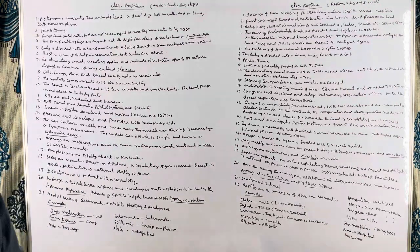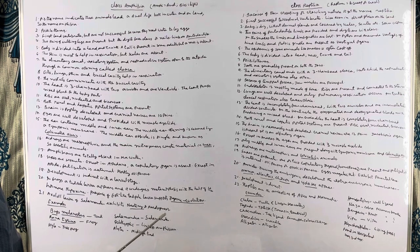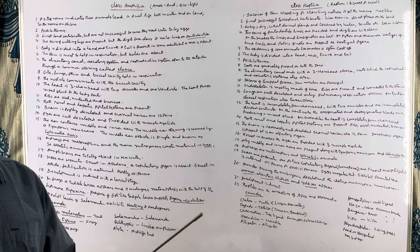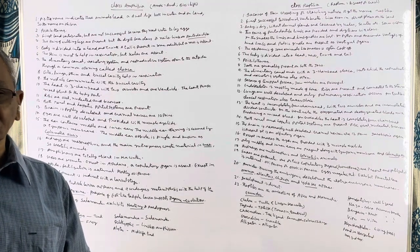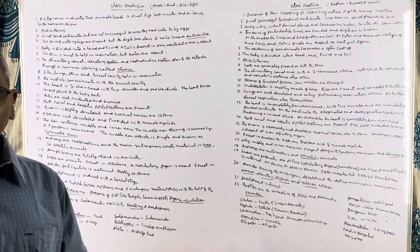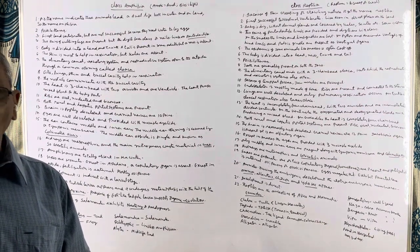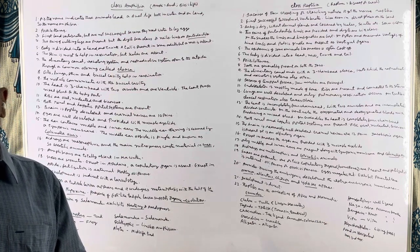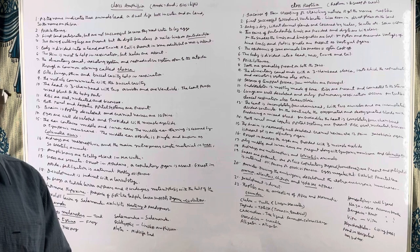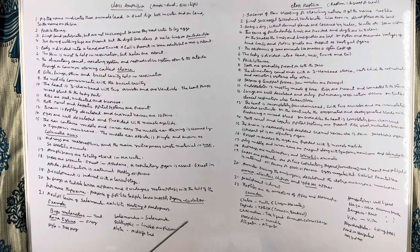There are some amphibians like salamander whose larva is called axolotl. The larva of this animal fails to undergo metamorphosis and it exhibits neoteny or paedogenesis. The larva develops gonads and reproduces — this is known as paedogenesis.